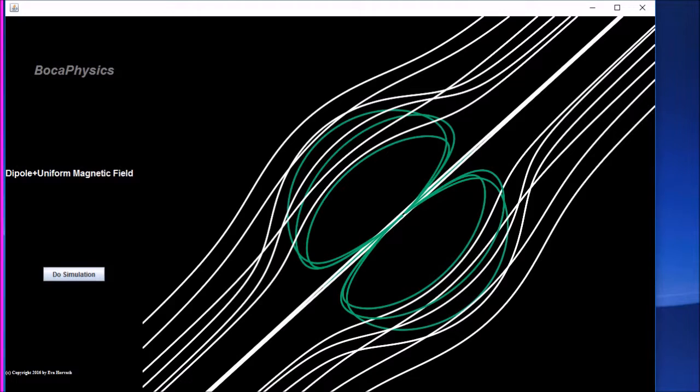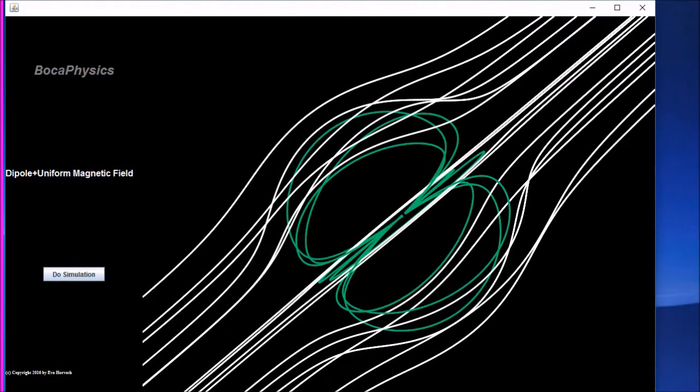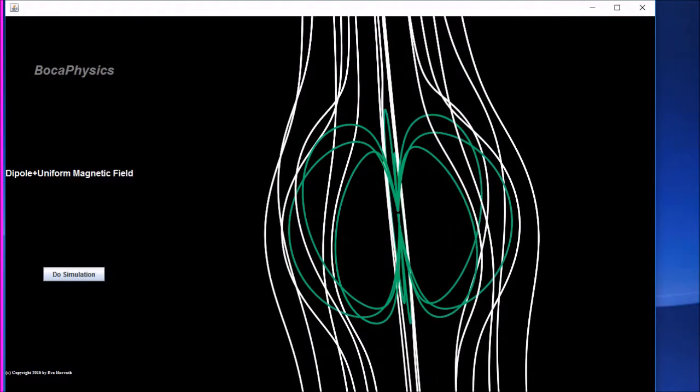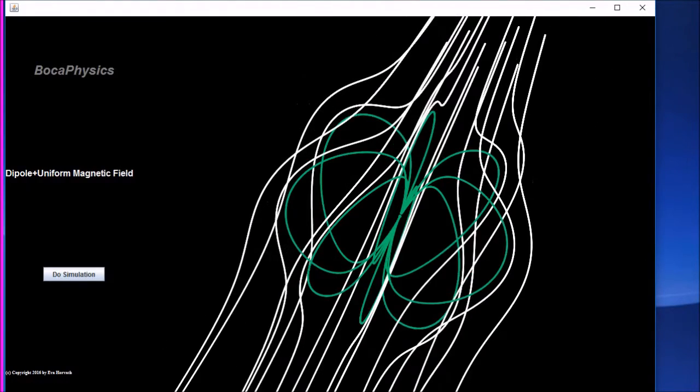It's also interesting to observe what happens when a pure dipole is placed in an otherwise uniform magnetic field that points in a direction opposite to that of the dipole. In this case, there is a spherical boundary which no field line can cross. Field lines in the immediate vicinity of the dipole are highlighted in aqua and field lines outside of the spherical boundary are white.